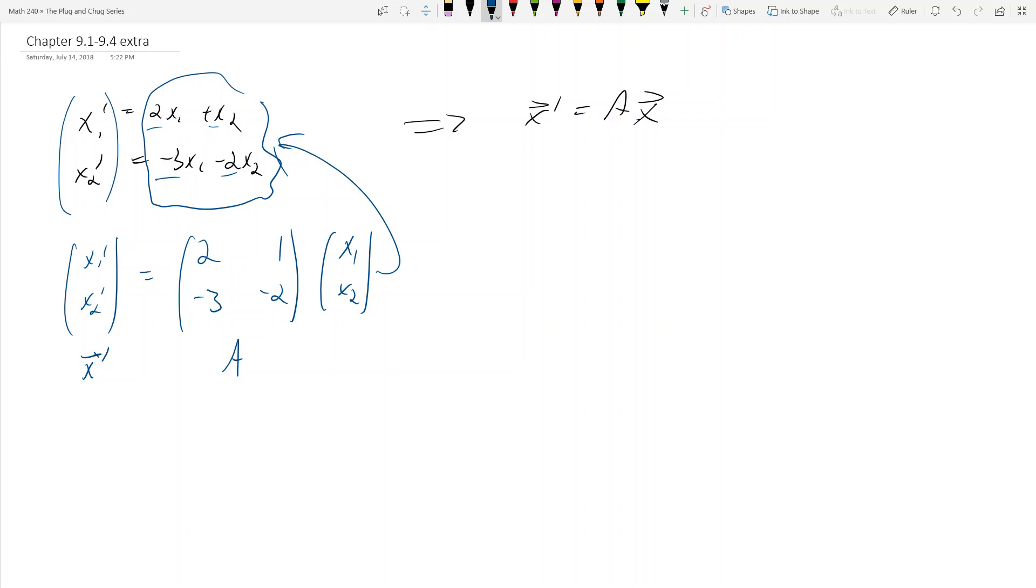So this is what x prime equals Ax means. It's actually just this guy up here completely rewritten in a new way. And so in the following videos when you see x prime equals Ax, this is what this is. This system up here is actually what we're portraying.